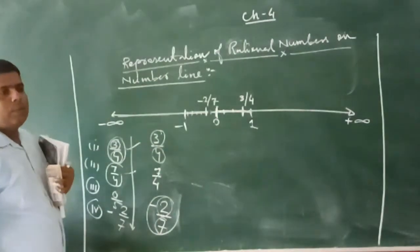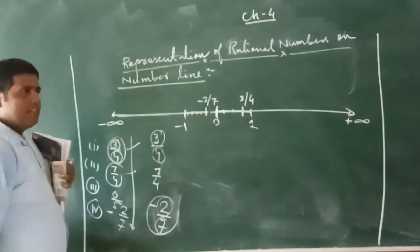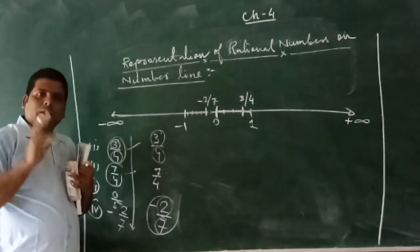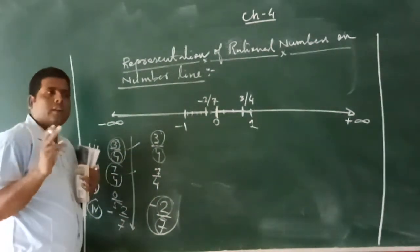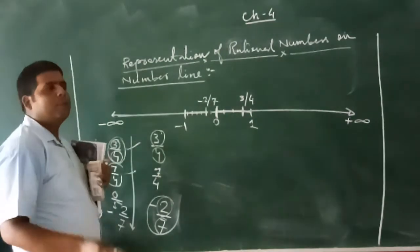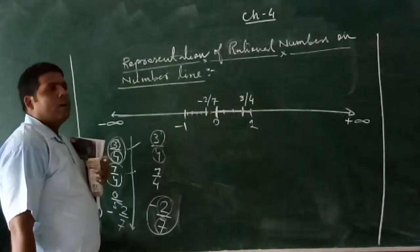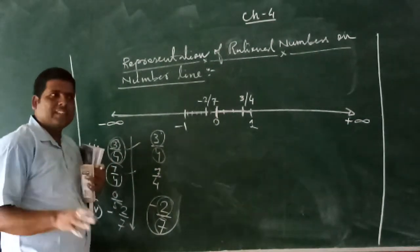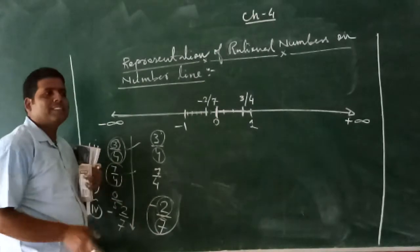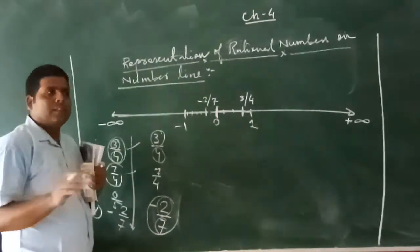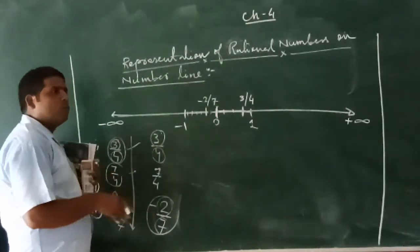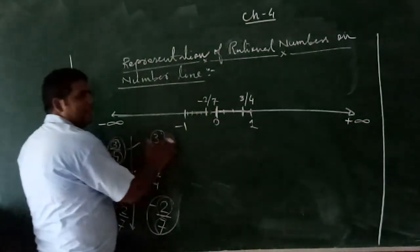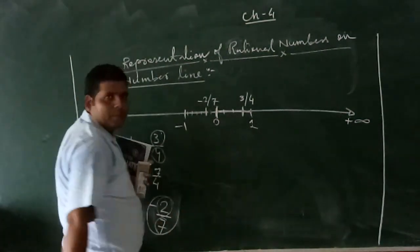In this way we can represent any positive rational numbers or negative rational numbers on the number line. Minus two by seven is located to the left of zero, and in this way we can represent the numbers on the number line.